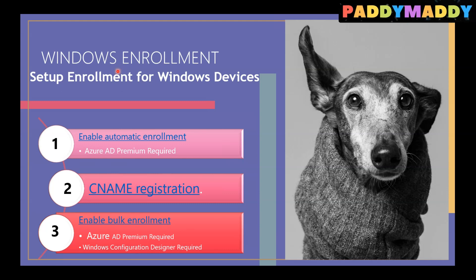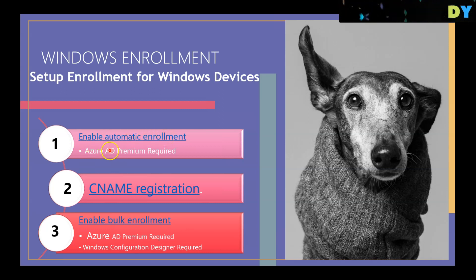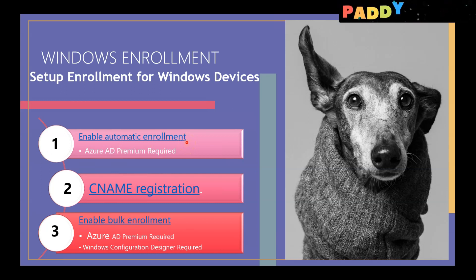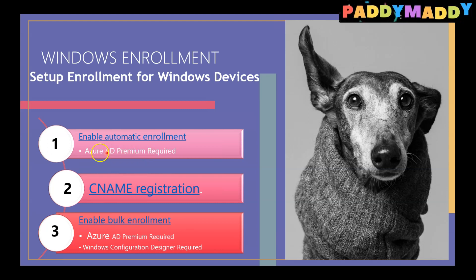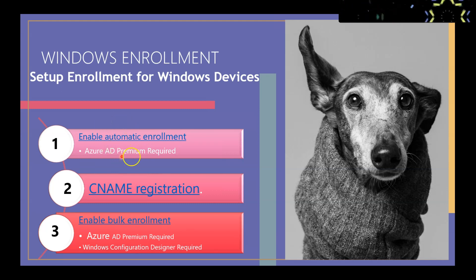How do you set it up? Do you want to go for complete automatic enrollment? That's the first option - automatic enrollment, which can be configured from the Microsoft Intune portal or MemAdmin Concert portal. But this requires a premium license, which is close to $6 per user - that's your Azure AD premium license. You also need to have an Intune license as well as the AD premium license to configure this.